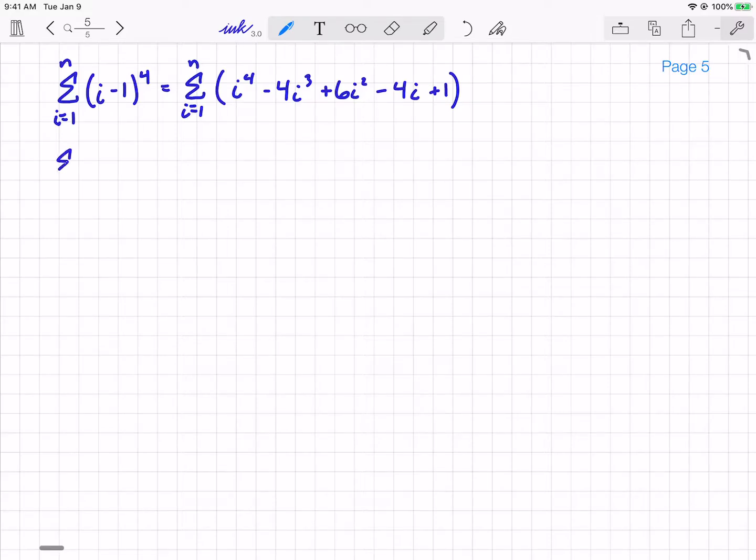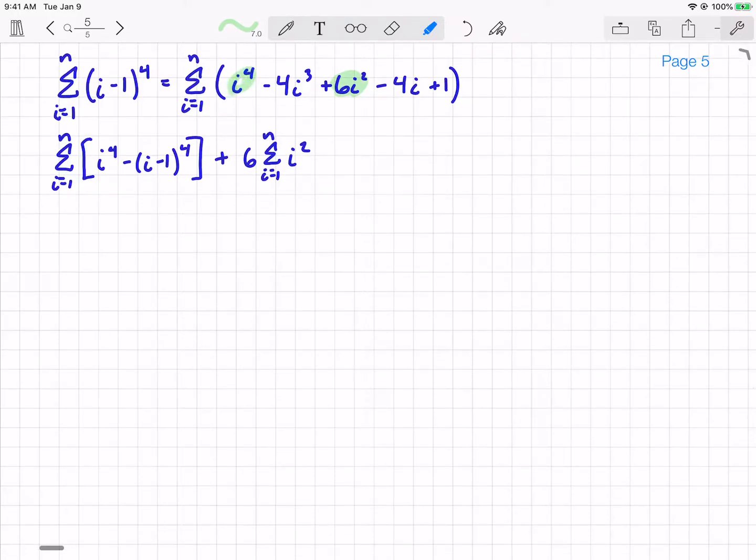And I've got the sum from i equals 1 to n of... I'm going to group the i to the 4th minus (i-1) to the 4th plus 6 times the sum from i equals 1 to n of i squared. That's this term here. I've already used this term and subtracted this term. And I'm ultimately going to do the minus 4i and the plus 1. So now I've got the minus 4 times the summation of i. And then lastly, plus the summation of 1.